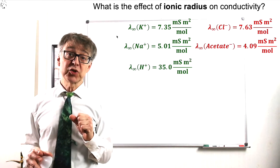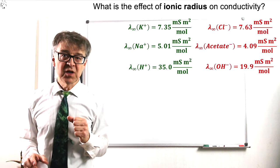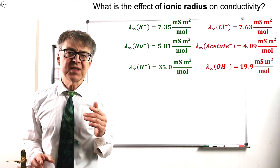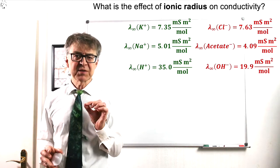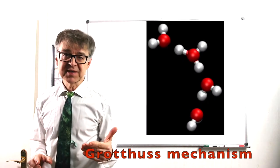H plus ions and OH minus ions are the best conducting ions in water. This is not because of their size, but because these ions are able to use a special conductivity mechanism in water, the Grotus mechanism shown here.